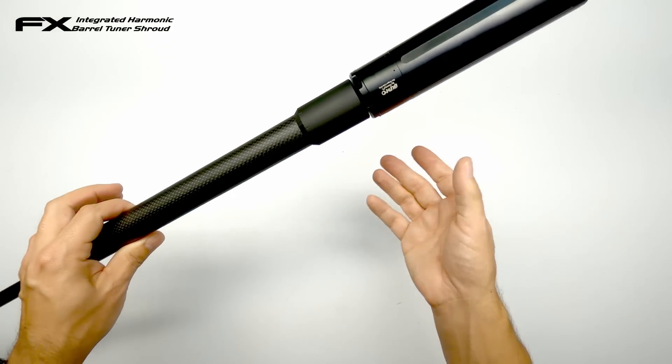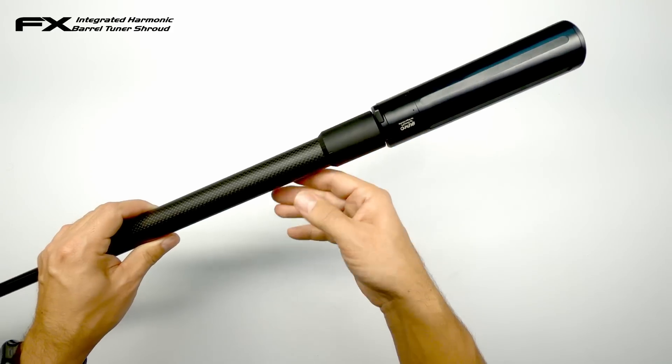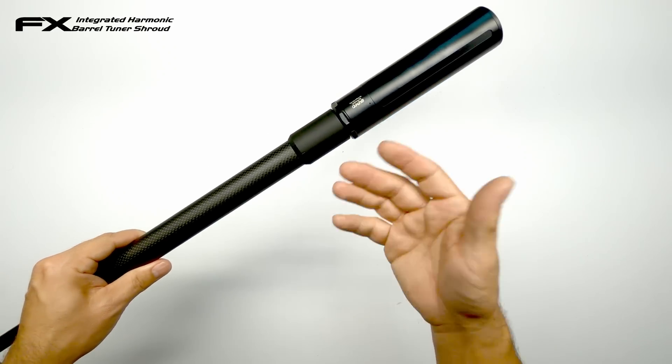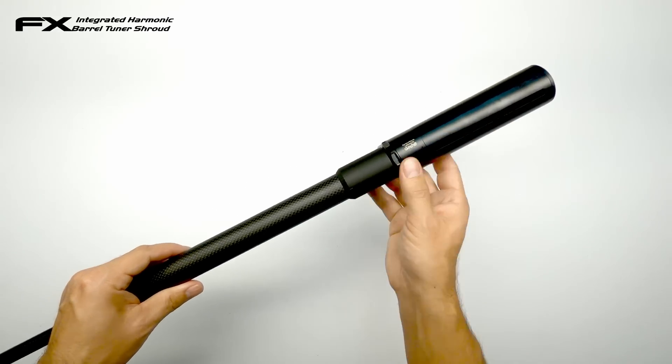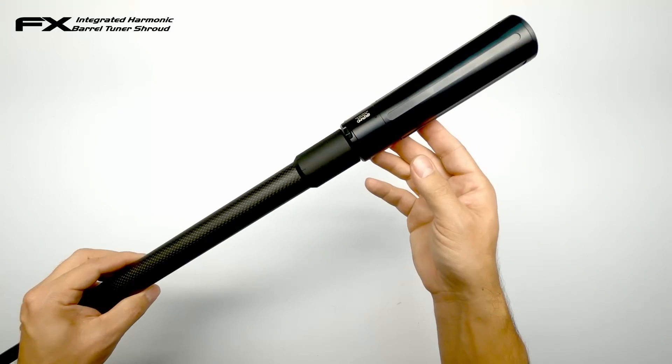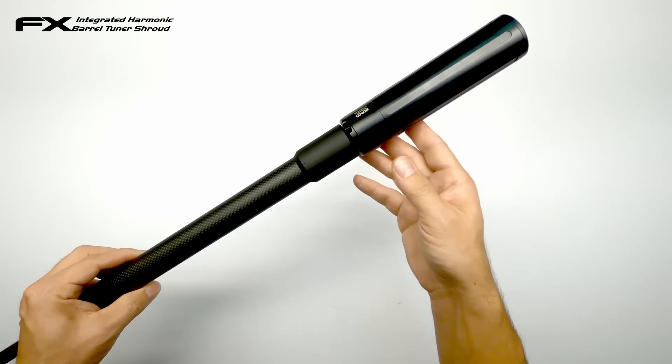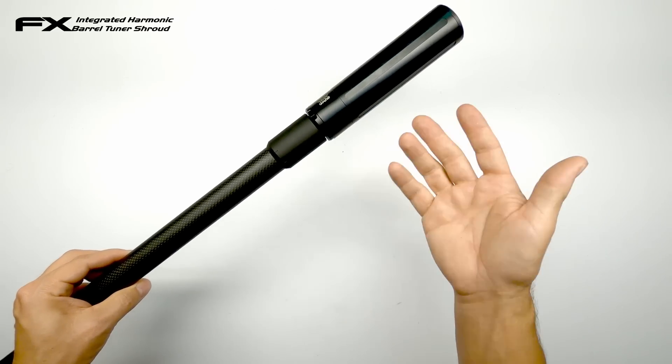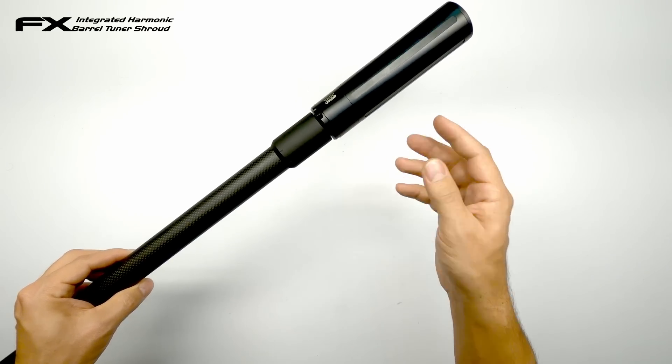In a separate video, once I go out to test some different slugs at the range, I will be showing how it exactly works on paper in real life. But for now, this is a short overview of the FX integrated harmonic barrel tuner and one of the several parts I've installed in my M3 in preparation for the slug setup. In previous videos I've also installed the slug power kit, a carbon fiber liner sleeve that really all plays together nicely.